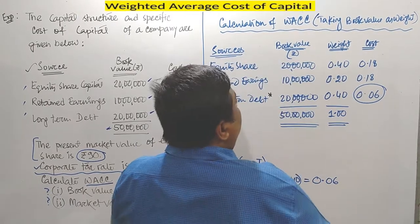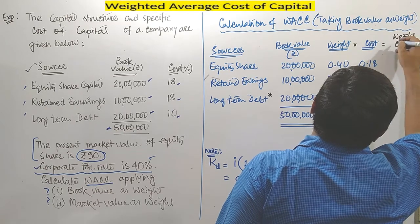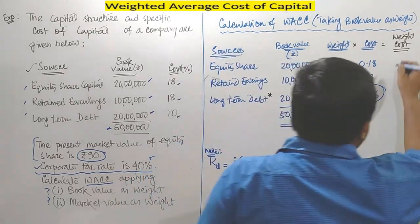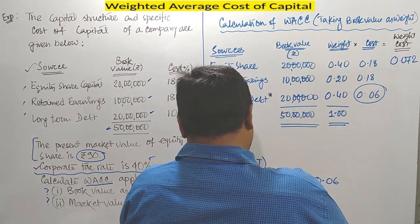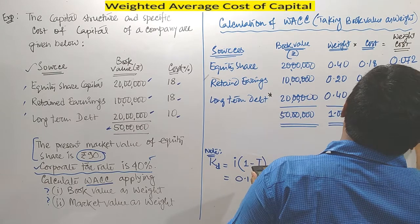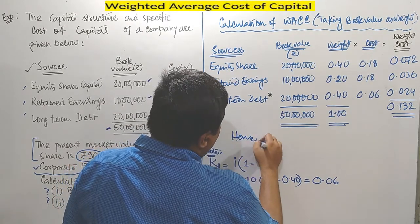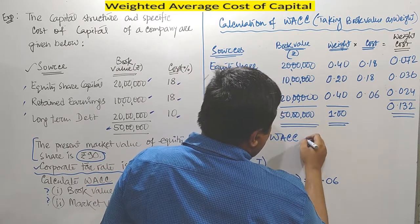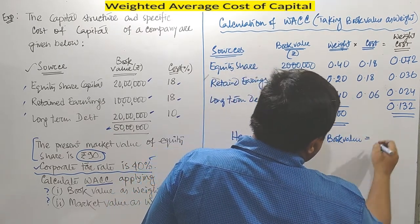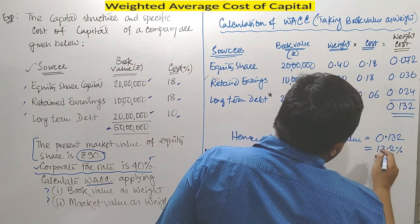Finally, we multiply weight by cost to calculate weighted cost. For equity share: 0.40 × 0.18 = 0.072. For retained earnings: 0.20 × 0.18 = 0.036. For long-term debt: 0.40 × 0.06 = 0.024. Summing these gives 0.132. Hence, WACC taking book value = 0.132, or 13.2%.